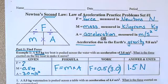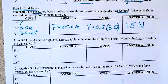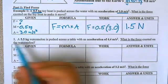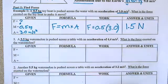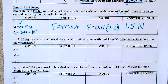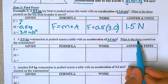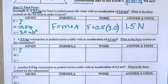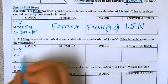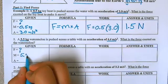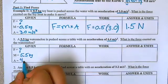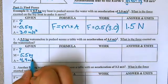So let's look at one more example for how to find force. Let's look at problem number 1. It says a 55 kilogram watermelon is pushed across the table with an acceleration of 4.4 meters per second squared. What is the force exerted on the watermelon? So again, we're looking for the force. The mass is in kilograms, so we know this is the mass, 5.5 kilograms.